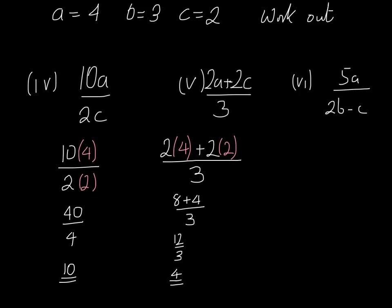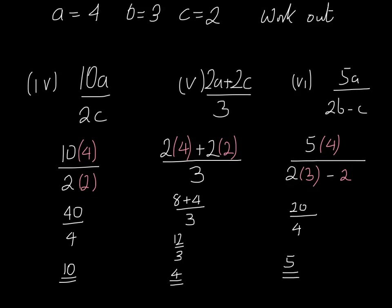Next example: 5A divided by 2B subtract C. So that's going to be 5 brackets 4 divided by 2 multiplied by B, and B is 3, subtract C which is 2. So we can work out the numerator: 5 times 4 is equal to 20. 2 multiplied by 3 is 6 and 6 take away 2 is going to be 4. So on the bottom we have 4 and 20 divided by 4 is clearly 5.